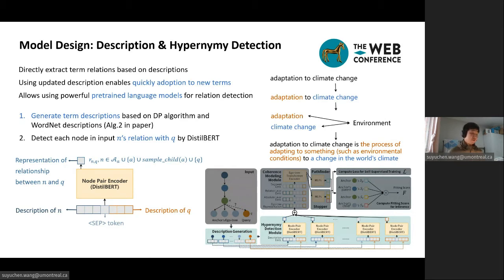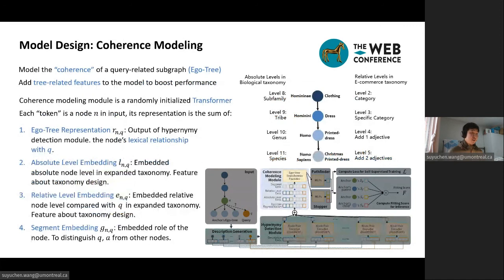For each node in the input, we concatenate its description with query's description for a pre-trained DistilBERT to detect its lexical relation with query. The DistilBERT will be fine-tuned in the training process. Now, for all nodes in the input, we have a representation of its lexical relation with query.